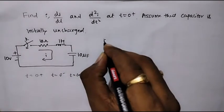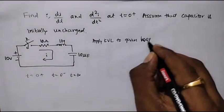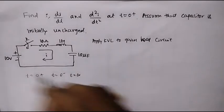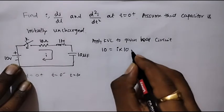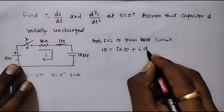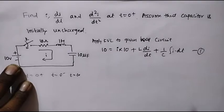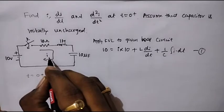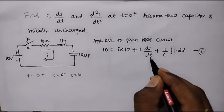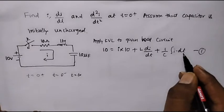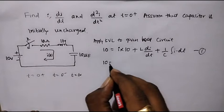I will apply KVL to this loop. That is: 10 is equal to voltage across the 10 ohm resistor, which is I into 10, plus voltage across the inductor, which is L di by dt, plus voltage across the capacitor, which is 1 over C integration of I into dt. We will call this equation number 1.